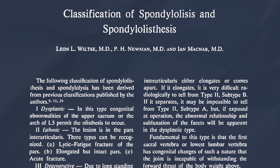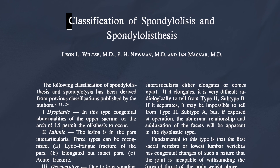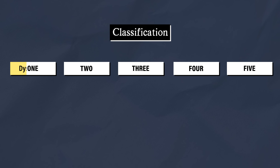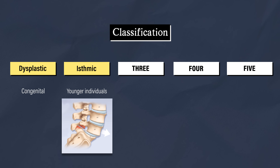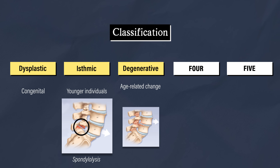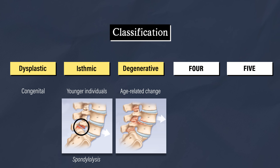There are also various classification systems to describe the types of spondylolisthesis. In 1976, Wiltse, Newman, and McNabb presented five categories: dysplastic, which is a congenital condition; isthmic, which most often occurs at L5-S1 and affects younger individuals, and is associated with stress fractures of the pars interarticularis — this specific fracture is known as a spondylolysis; degenerative, which most commonly occurs at L4-L5 and is associated with age-related changes of the spine; post-traumatic; and pathologic.